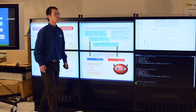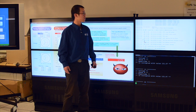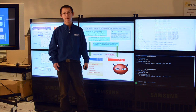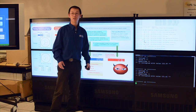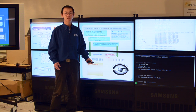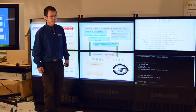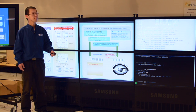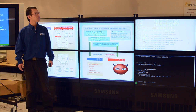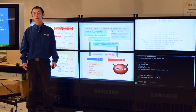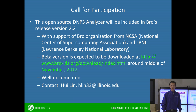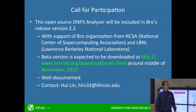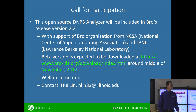Let's go back to the SCADA master. During this whole process, the SCADA master behaves exactly as before, meaning the corrupted data successfully avoided detection by the SCADA master. This DNP3 analyzer will be included in the Bro release version 2.2, with the support of the Bro organization from NCSA in Illinois and LBNL in Berkeley. It will be available for downloading around November 2012.